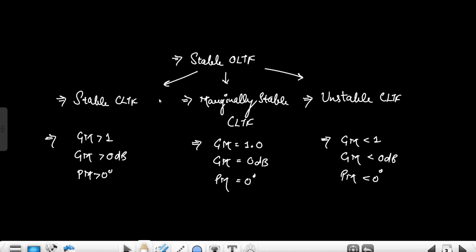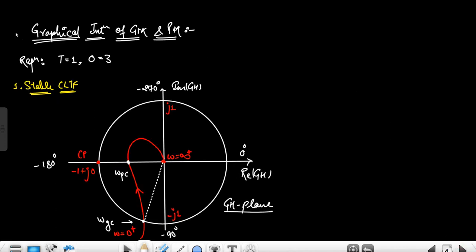Can we identify these three cases just by looking at the polar plot? Yes, definitely. For the graphical interpretation of gain margin and phase margin in a polar plot, I am taking the reference of a type 1, order 3 system. Type 1 means the plot starts at minus 90° and order 3 means it ends at minus 270°. So here I am taking this as the reference for explaining all three cases.